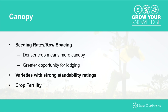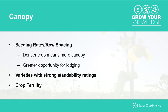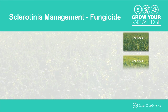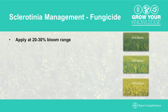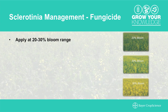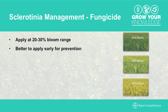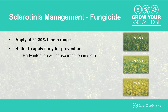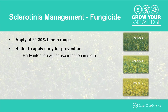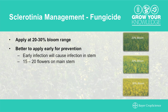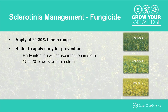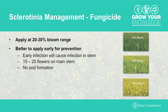Crop fertility is another consideration. Growers are targeting higher yields than ever, and anything you do to create a really good environment for a good crop is also conducive for the disease to manifest itself. Regarding fungicides, sclerotinia can be effectively managed with a single fungicide application. Typically, applying in that 20 to 30% bloom range is recommended, though some products allow up to 50%. It is better to go early overall, because early infections are going to infect the main stem and cause the entire plant to die. That time frame is around 15 to 20 flowers open on the main stem with very little petal drop and no pod formation.